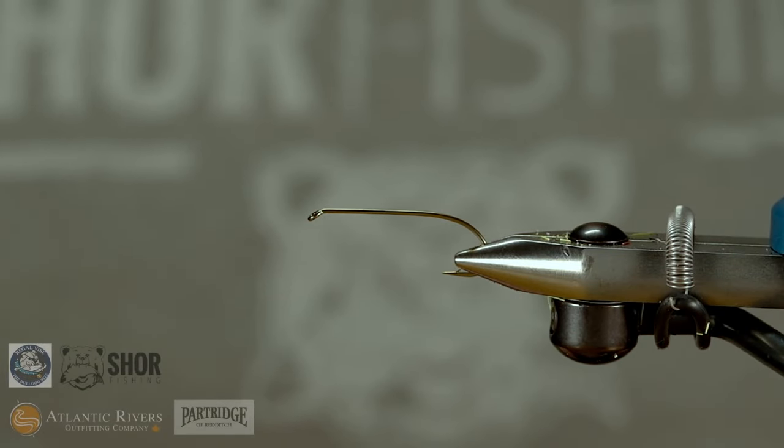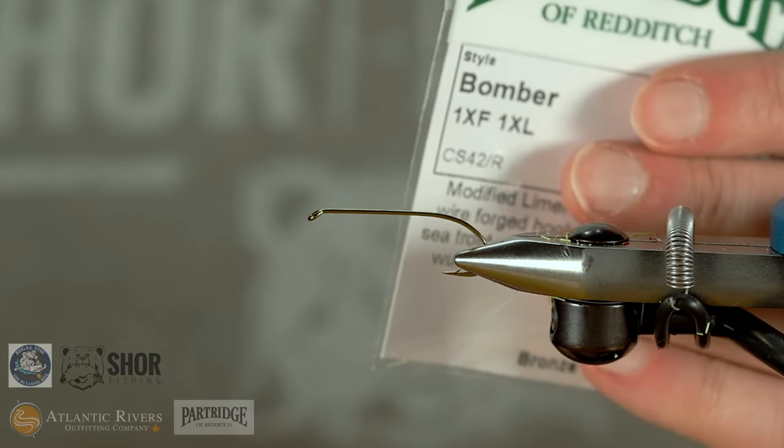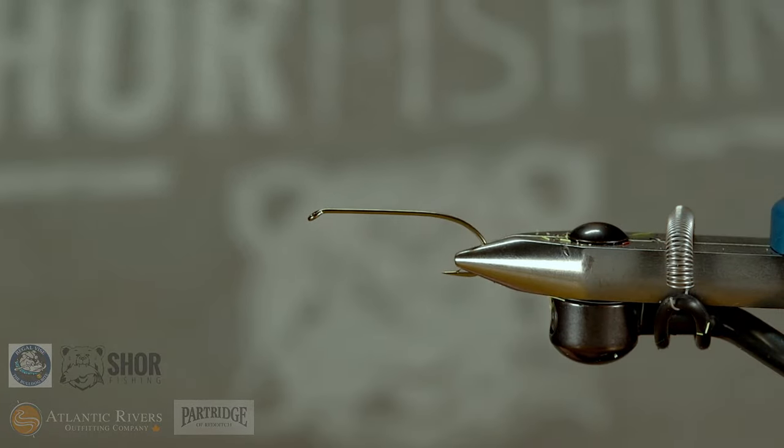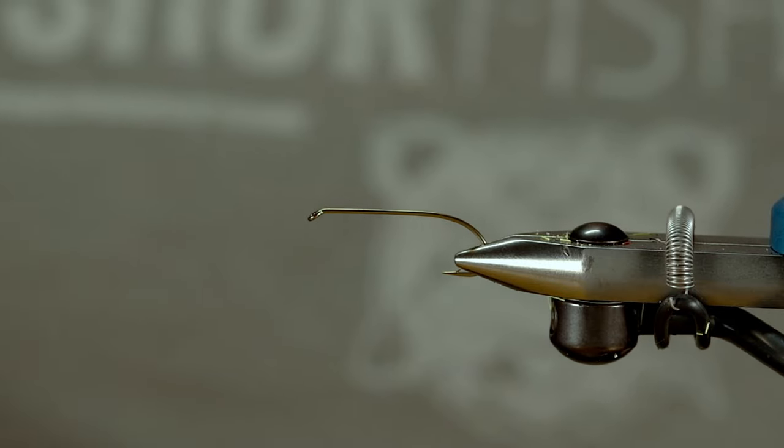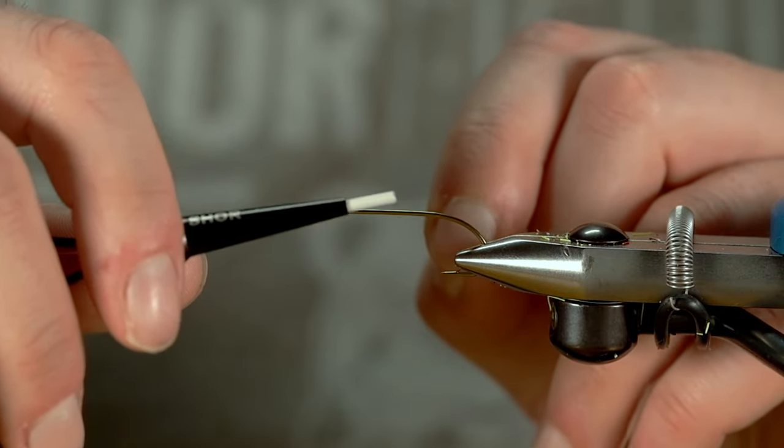All right folks, we're going to start off by using a CS42 in a size 6. That's Partridge's bomber hook. That's my hook of choice for bombers. Nice strong hook.